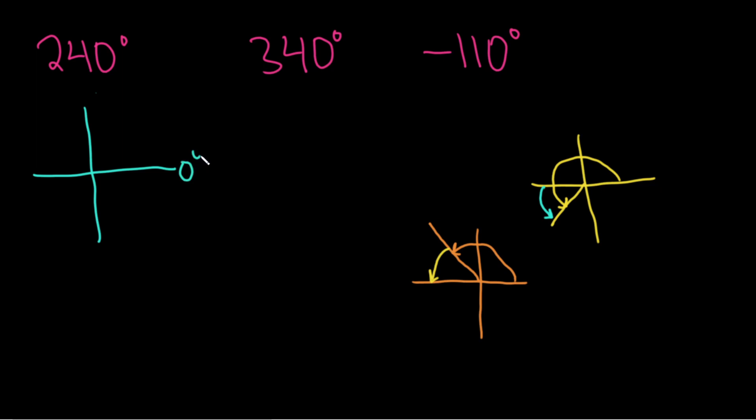So we know that this is 0 degrees, and this is 90 degrees, and this is 180 degrees. So this here must be 270 degrees, and then this is also 360. Okay, so 240 is going to be over here somewhere, because it's less than 270 and more than 180.